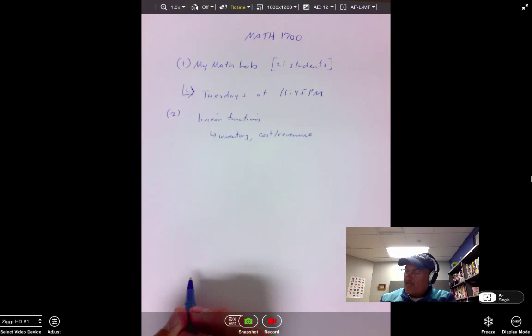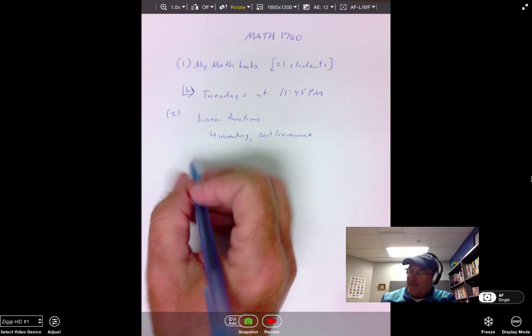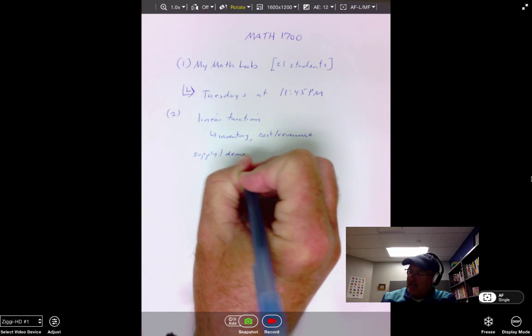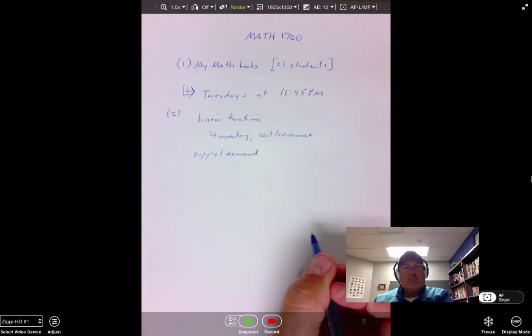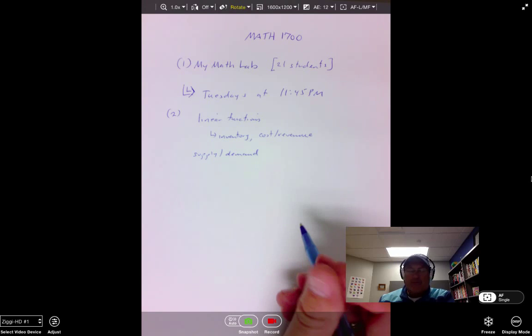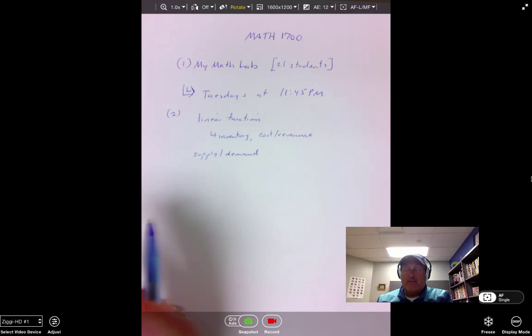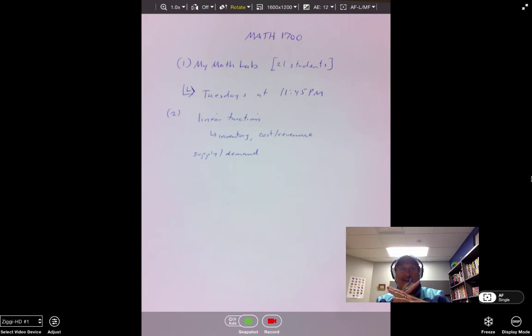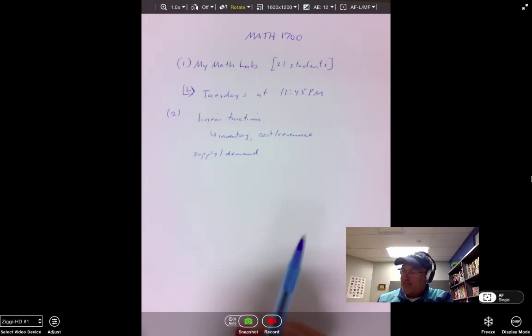The next video that I put up is on supply and demand. That's usually one of the tougher problems that people have. I don't really know why, because it's just the application of linear functions and what we run into is where two straight lines cross, and that point of intersection turns out to be something we call the equilibrium price.